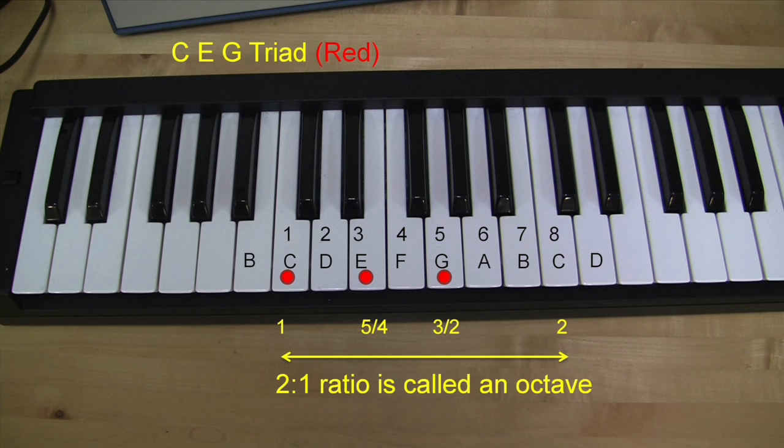You can remember that by numbering the white key starting with C until you get to the next C. Similarly, a frequency ratio of 3x2 is called a fifth. In this case, the C and G form a fifth. Major third is 5x4 and minor third is 6x5.